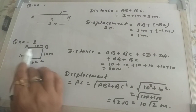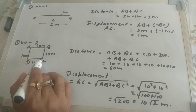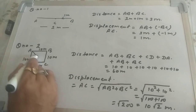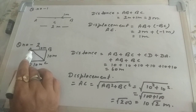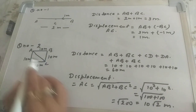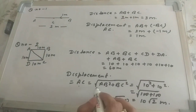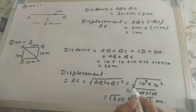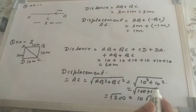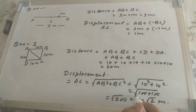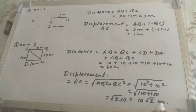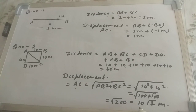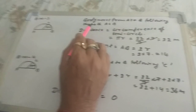After one and a half rounds the body reaches point C, so displacement is AC. Triangle ABC is a right-angle triangle, so displacement AC equals the square root of AB squared plus BC squared, which is the square root of 10 squared plus 10 squared, giving 10√2. Substituting √2 as 1.4, the answer is 14 meters.